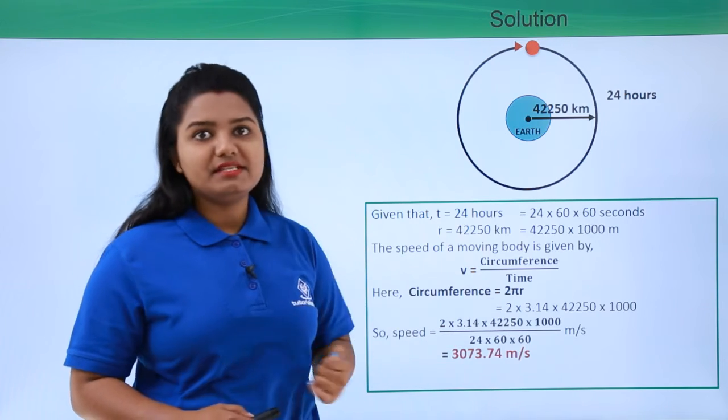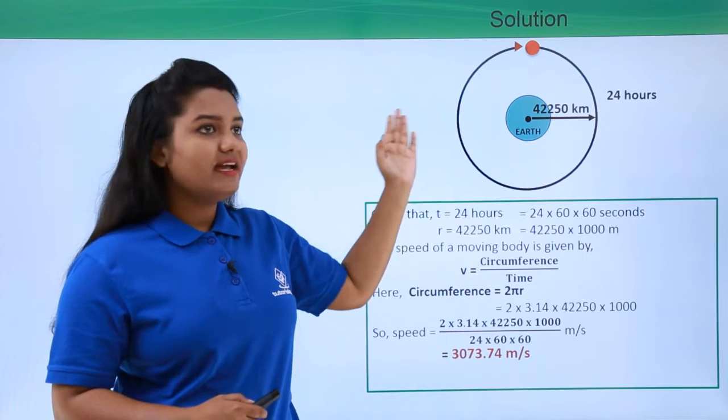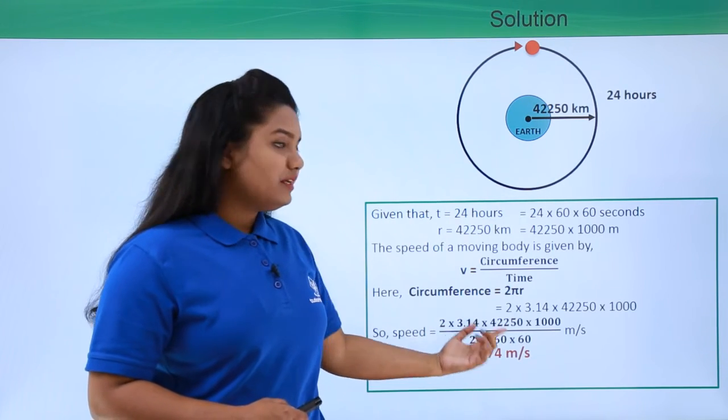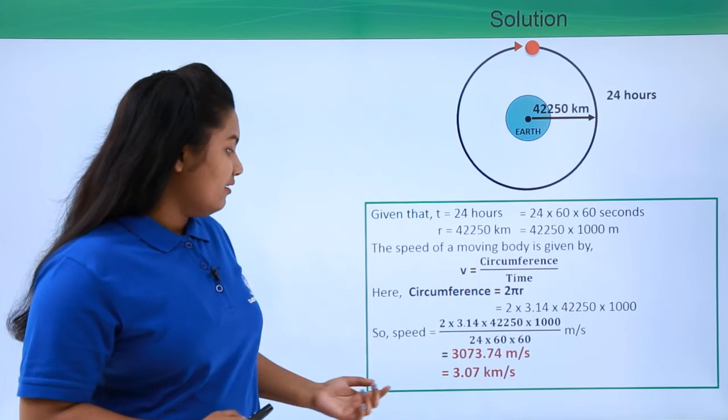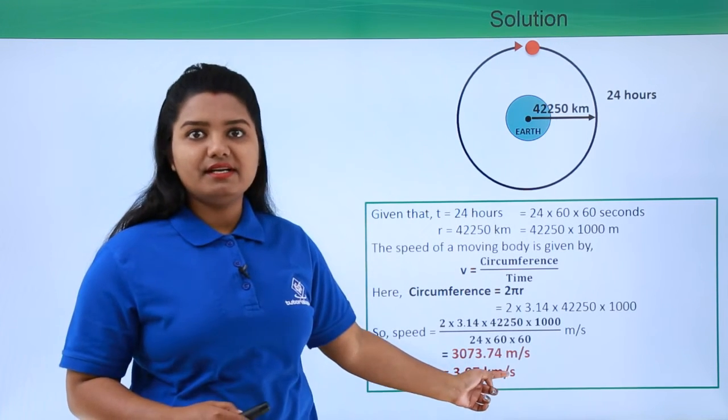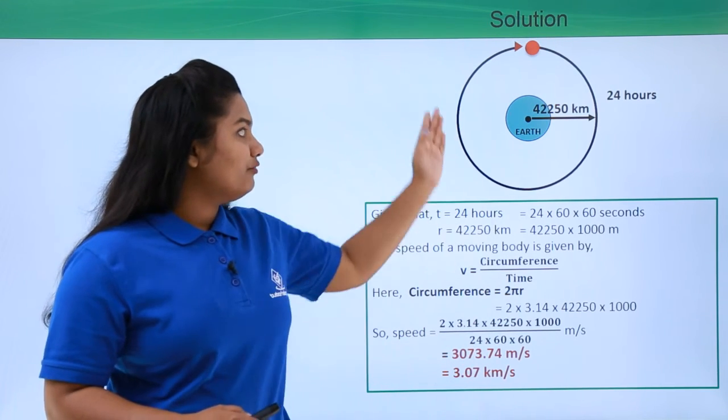On converting this to kilometers per second, we have the speed to be 3.07 kilometers per second. So this is the speed of the artificial satellite moving around the earth.